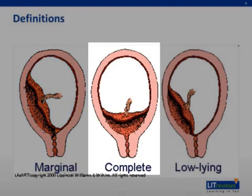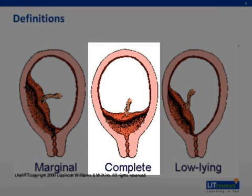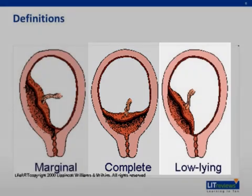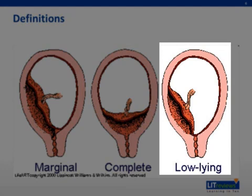In a complete previa, the placenta covers the entire internal cervical os. Of complete previas, 20% to 30% are central previas, in which the os is equidistant from the anterior and posterior edges of the placenta. Lastly, a low-lying placenta is one in which the placenta is within 2 centimeters of the internal cervical os.